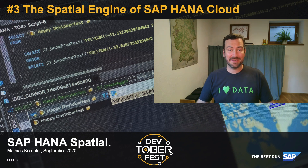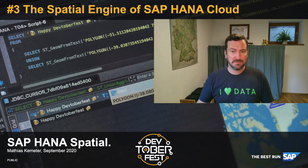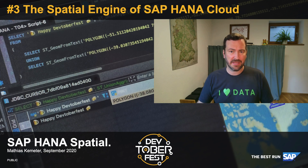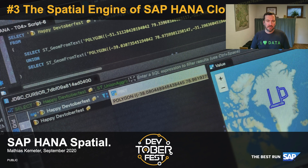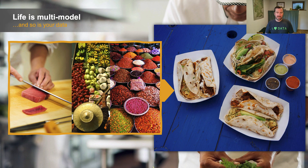Hi, everyone. My name is Matthias and I'm glad you're still following my videos. As promised before, in this video I'm going to deep dive into the features of the spatial engine of SAP HANA and SAP HANA Cloud. I've told you before that spatial data is part of SAP HANA's multi-model concept, and I told you my analogy with food, where you have to process ingredients differently to get your delicious meal at the end of the day. Now I'm going to deep dive what that means on a technical level.